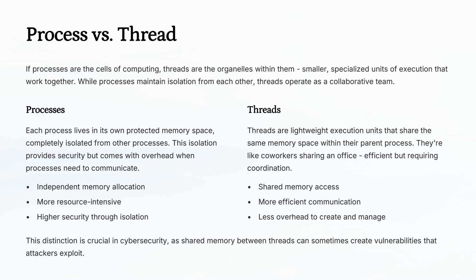If a process is like a single cell, then threads are the organelles inside it — smaller units that work together to keep the cell alive. Processes are isolated from each other, providing security, but that isolation can add overhead. Threads, on the other hand, share memory within their parent process, making communication faster, but sometimes less secure. Attackers love exploiting that shared memory for their own gain.